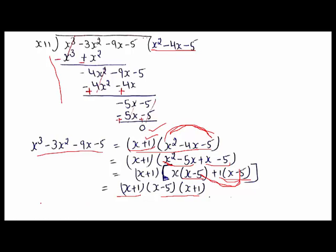For a cubic equation: first find the possible factors of the constant term, then substitute the values one by one and find the factor which gives the polynomial value 0. Then by the Factor Theorem, if p(a) = 0, then (x minus a) is a factor. Divide the polynomial by that factor and write dividend equals divisor times quotient. On solving, you will get all the factors.